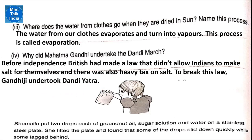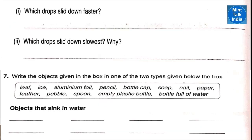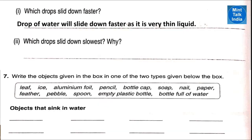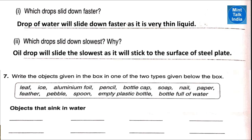Sharmila put two drops of groundnut oil, sugar solution, and water on a stainless steel plate. She tilted the plate and found that some drops slide down quickly whereas some lagged behind. Which drop will slide down faster? Drops of water will slide down faster as it is a very thin liquid. Which drop slides down the slowest and why? The oil drop will slide down the slowest as it will stick to the surface of the steel plate.